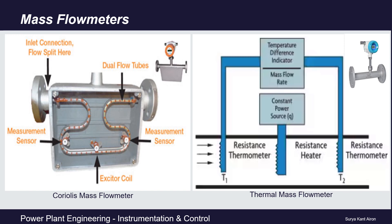A Coriolis mass flow meter works using the inertia caused by the fluid flowing through oscillating tubes. Fluid enters on one side, passes through the tubes, and exits the other side. The fluid exerts pressure on the tubes, causing them to vibrate. This vibration is excited by an exciter coil and measured by two measurement sensors. The inertia causes the tubes to twist in proportion to the mass flow rate, and this twisting is measured with sensors to generate a linear flow signal.